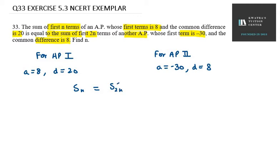So, how do we define S_n? n over 2, in bracket 2a, a value is 8, plus n minus 1 times d, d is 20, equals S dash 2n,